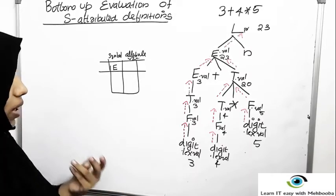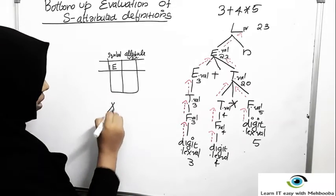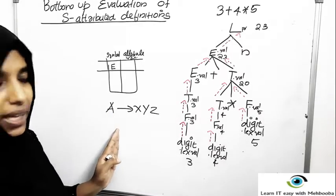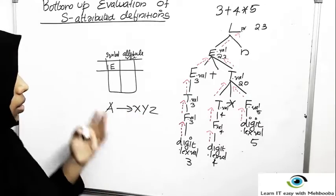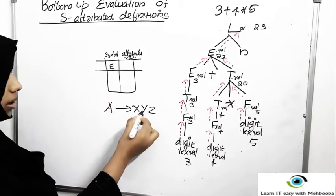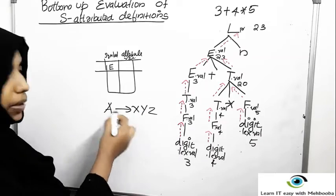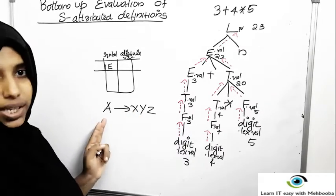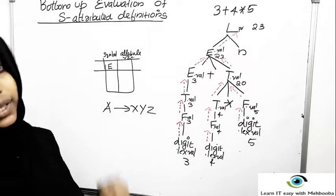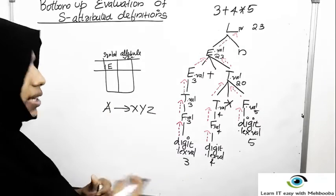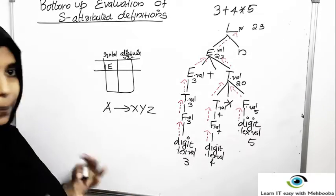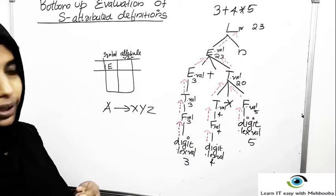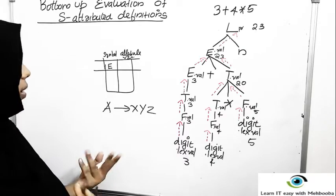Whenever a production A gives XYZ is used, the right-hand side is reduced to the left-hand side and the top is updated accordingly. The three symbols XYZ are replaced with the single symbol A on the left-hand side, so the top is decremented by two. In case of reduction, the top pointer will always be decremented.